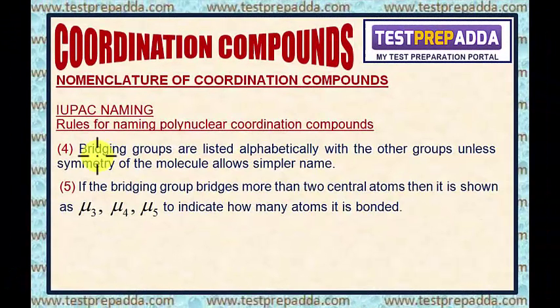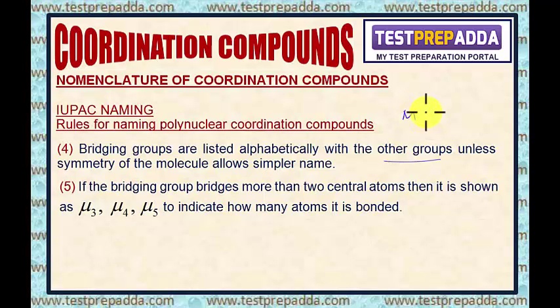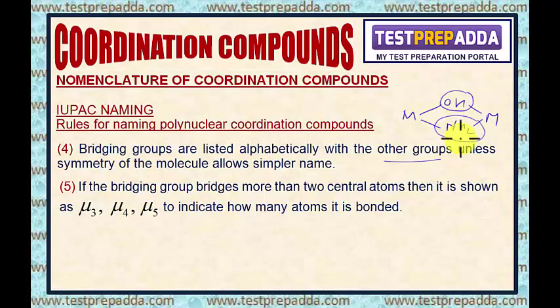Rule four says: bridging groups are listed alphabetically with the other groups, unless the symmetry of the molecule allows a simpler name. For example, if we have a metal with bridging ligands OH and NH2, this gives mu-hydroxo and mu-amido respectively. Since we list alphabetically, we first write mu-amido, then mu-hydroxo.